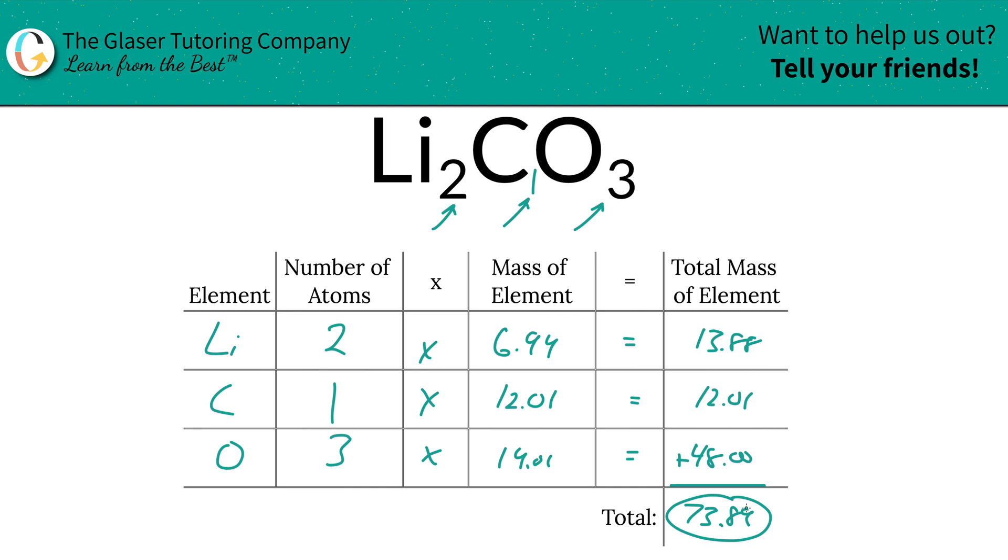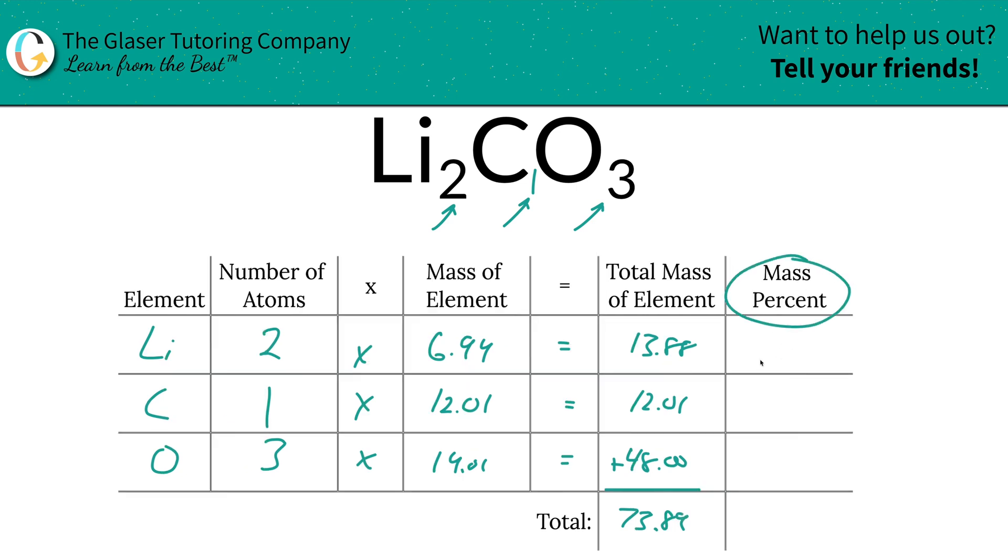Now we can find the percents of each of these elements, and it's going to be easy as pi. I'm going to add in a column to the table to help us out. To find the mass percent of lithium, we're going to take the total mass of the lithium, the 13.88 units of mass, divided by the total amount of the entire compound, 73.89. Hence why we had to find the total mass first.